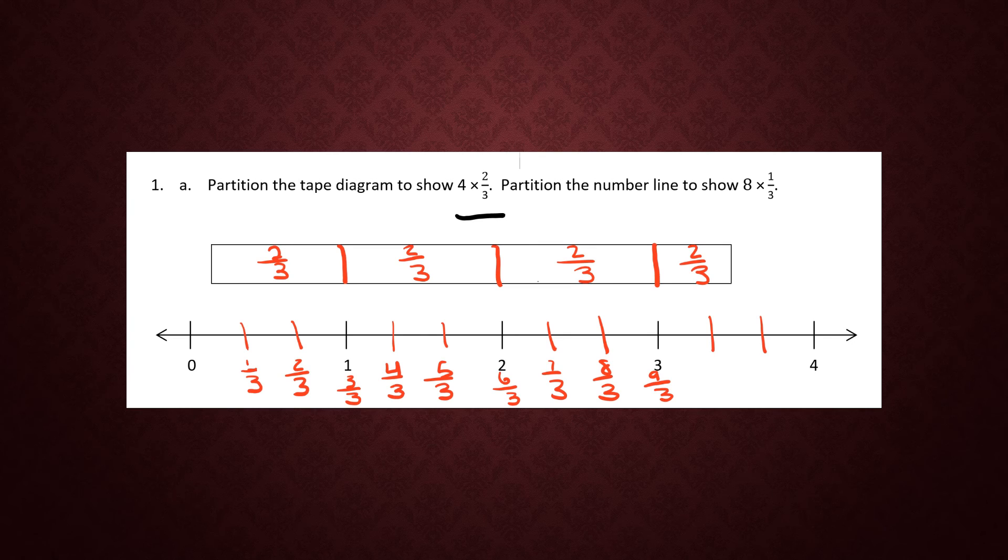I'm going to start at 0 and jump forward 8 times: 1, 2,